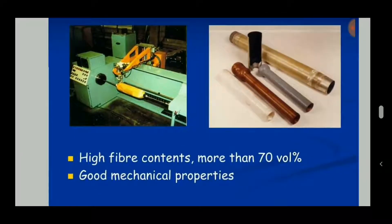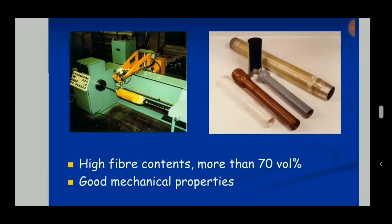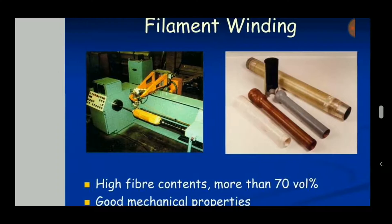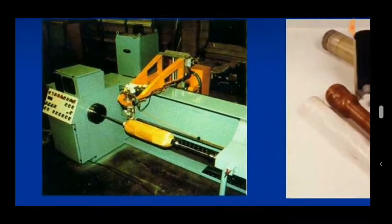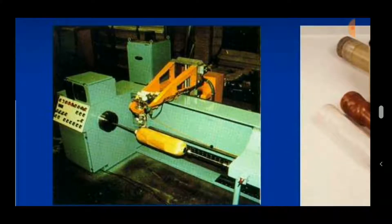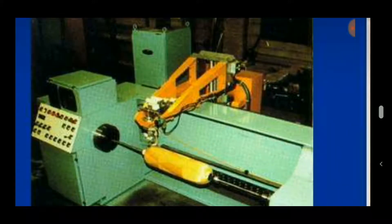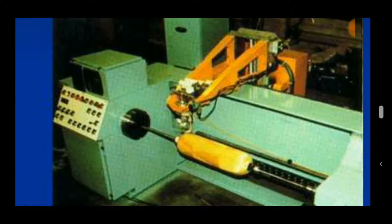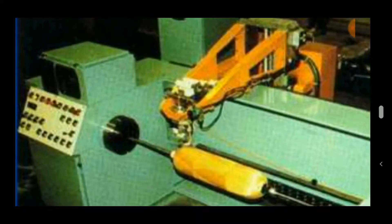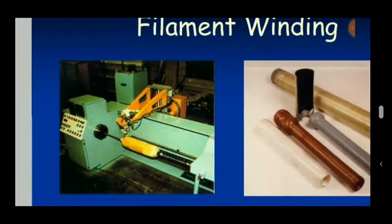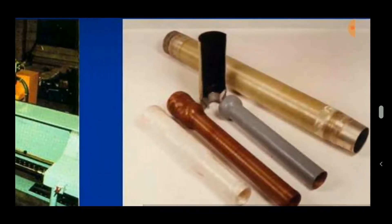This process is useful because it has a high fiber content — more than 70% of its volume — and good mechanical properties and strength. This is a filament winding machine consisting of a barrel fitted inside the centers, an arm used to wind the filament bathed with resin, and a tensioner to tighten the winding.